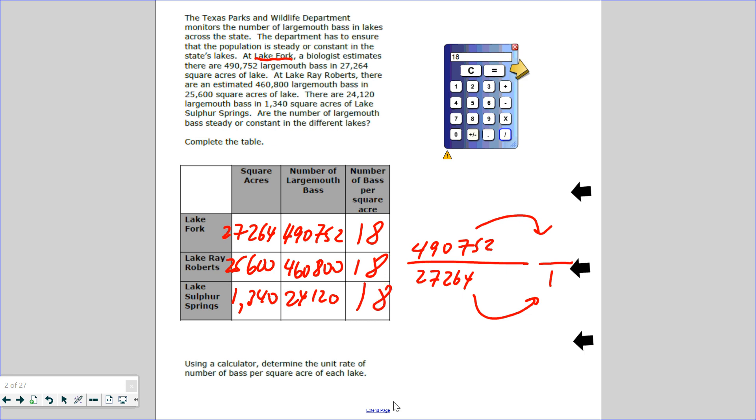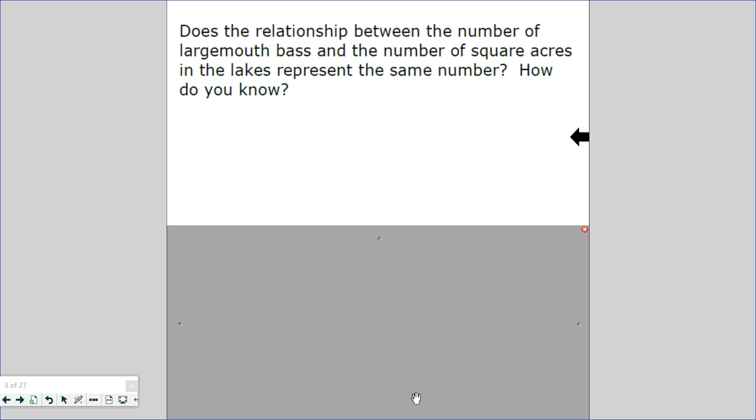So if I put in my calculator, 490,752 divided by 27,264, there are 18 bass per square acre. Let's try the next one. 460,800 divided by 25,600 acres, that's 18 bass per square acre. So far, it's pretty constant and steady. There are 24,120 bass in Lake Sulphur Springs, I divide it by 1,340 acres, there are 18 bass per square acre.